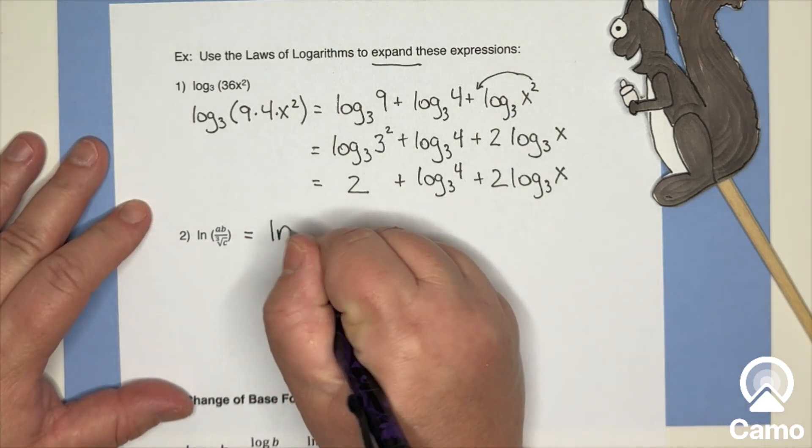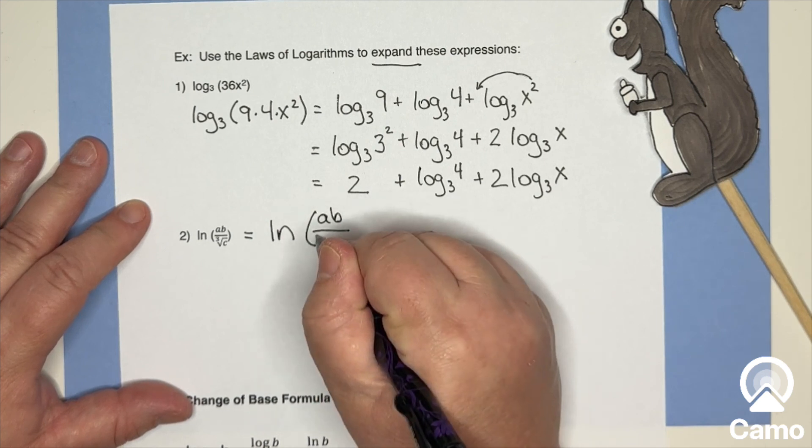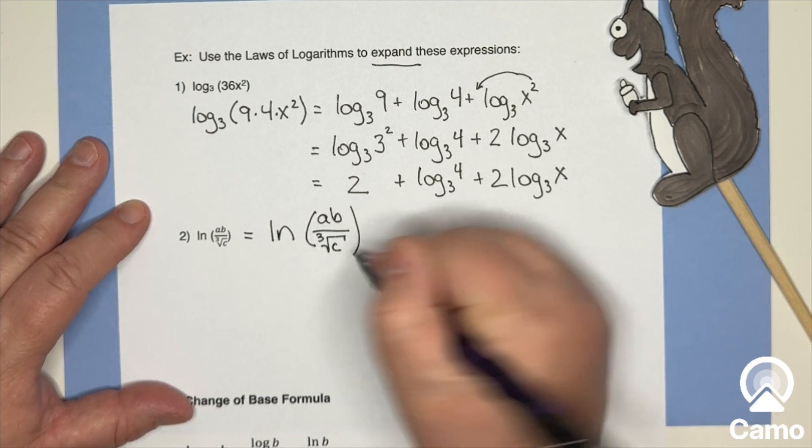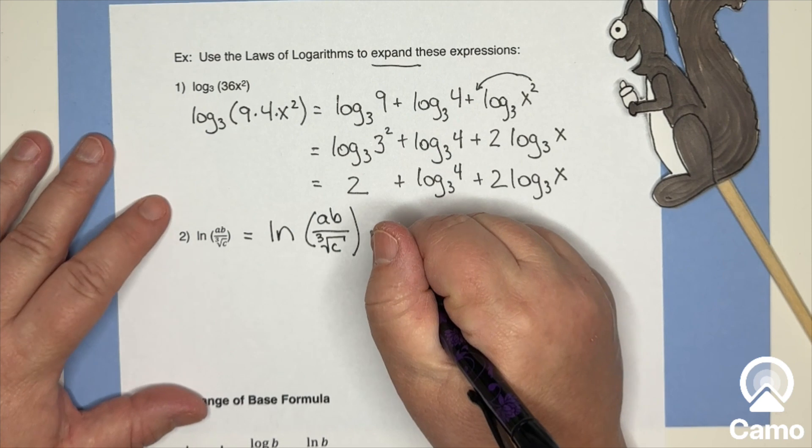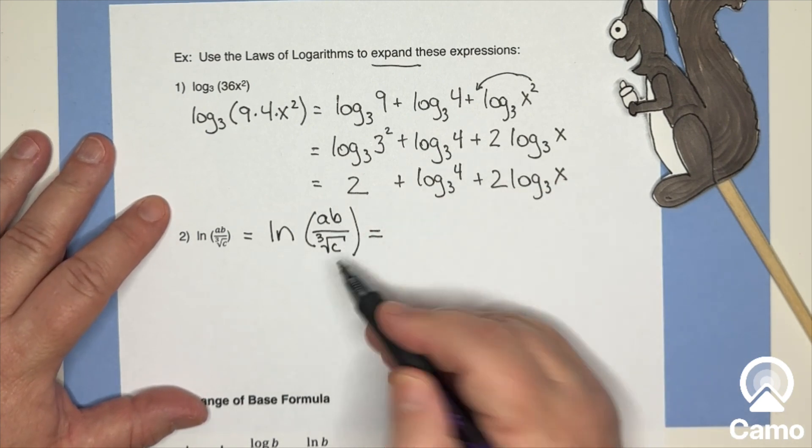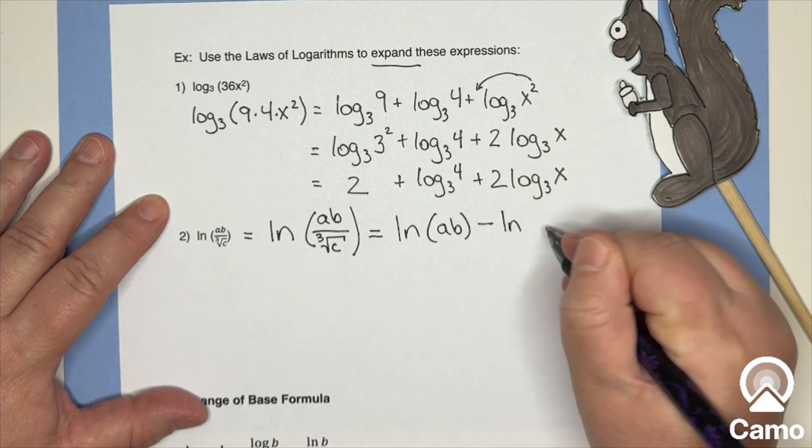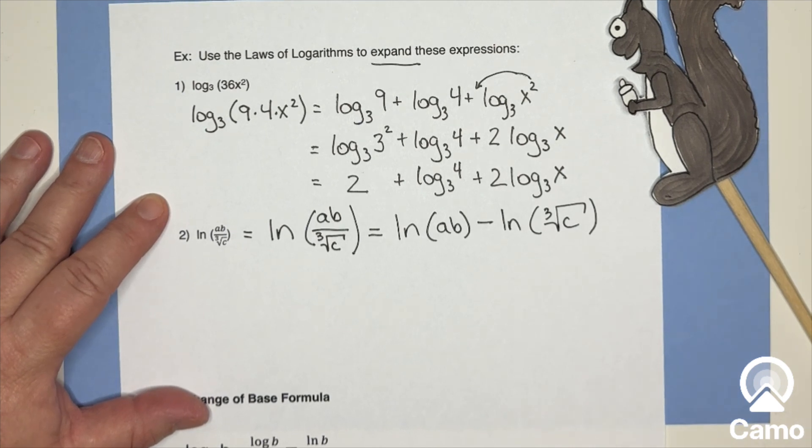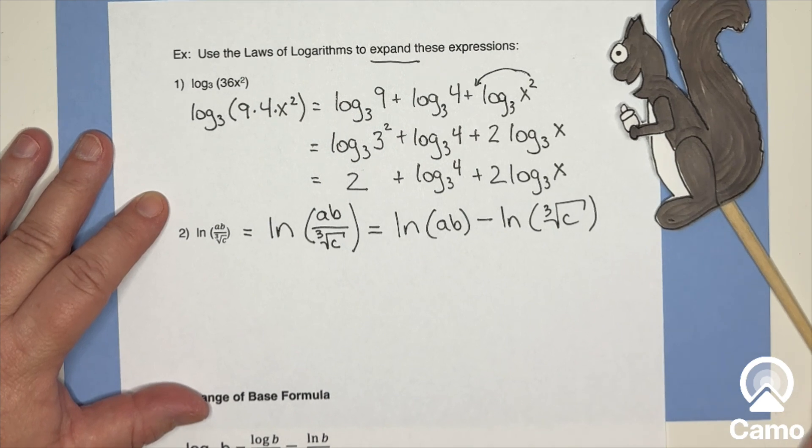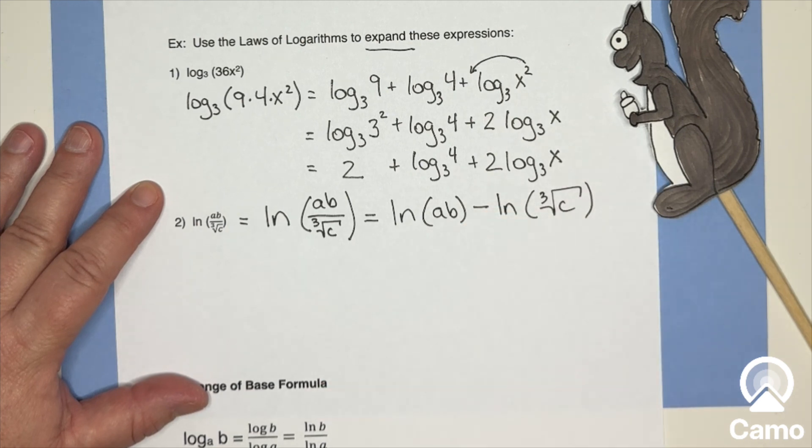Okay. I've got natural log of the quantity a times b on top and the cube root of c on the bottom. Okay. So that tells me I've got the ratio. So I've got natural log of ab minus natural log of the cube root of c. Okay. Can I expand this any further? That was a good first step. The second step is going to be, I see that I've got two things multiplied together, squished together in a logarithm. So I'm going to split these out.